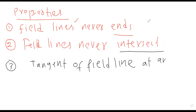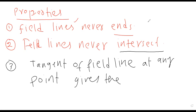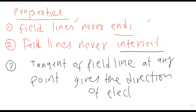Electric field lines ki most important property: it gives the direction of electric field. Yaad rakhhiye ga — jo hum tangent line draw karte hain us tangent line draw ki buniyad par hum yeh concept discuss kar sakte hain. Tangent jo banta hai woh electric field ka direction deta hai.